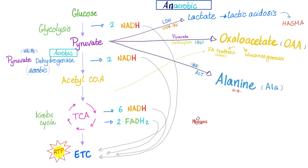And if pyruvate cannot become acetyl-CoA, pyruvate will go somewhere else. Why is it that pyruvate cannot become acetyl-CoA? Because I'm missing the pyruvate dehydrogenase complex enzyme. So pyruvate will go to one of the ugly paths, especially lactic acid — an acid that can lead to lactic acidosis, which is high anion gap metabolic acidosis. Also, pyruvate will give me oxaloacetate and alanine. So in patients with pyruvate dehydrogenase deficiency, we expect elevated levels of lactic acid, lactic acidosis, high anion gap metabolic acidosis — which means the pH of the arterial blood is low, bicarbonate in the blood is low, and the serum anion gap is high. We also expect elevated levels of alanine.